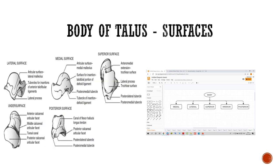Coming to the body of the talus, the body consists of five surfaces: superior, inferior, medial, lateral, and posterior. There is no anterior surface because the anterior surface is covered by the neck. So there are in total five free surfaces: superior, inferior, medial, lateral, and posterior.